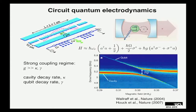You can describe the system using the Jaynes-Cummings Hamiltonian, where you have your cavity as a harmonic oscillator, your qubit, and then the qubit-cavity interaction term characterized by the coupling parameter G. G is basically the product of the qubit transition dipole moment and the RMS vacuum electric field of the cavity. Ideally, you want to be in the strong coupling regime, where G is much greater than both the qubit and cavity decay rates. In this strong coupling regime, you can have a coherent exchange of a single quantum of energy between the qubit and the cavity.